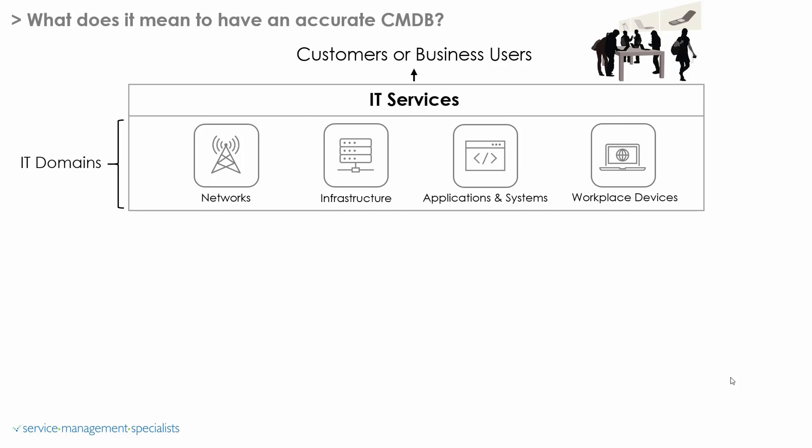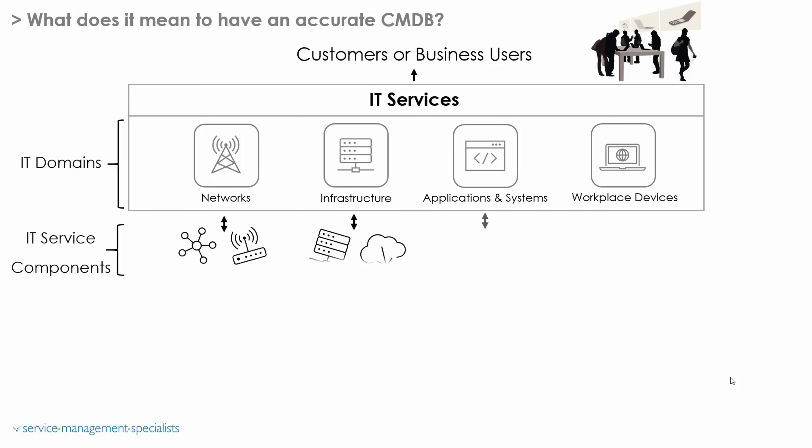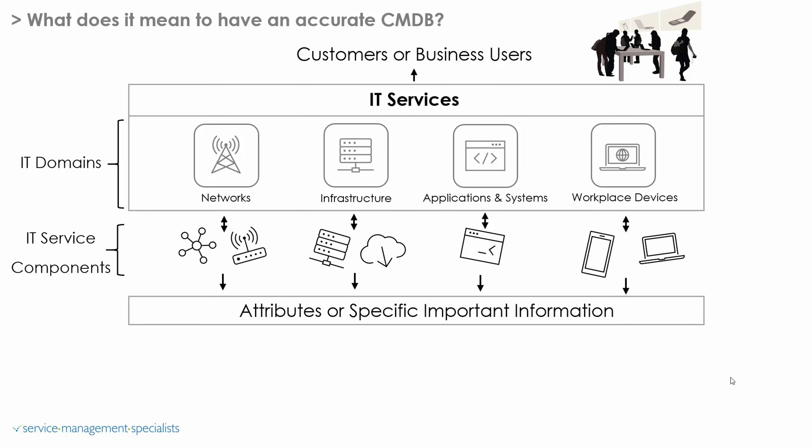If we think about those domains, what sits underneath them is a series of IT service components. There are a number of these that are used to roll up and be combined to deliver the services. What's really important is that we capture important information around each of these IT service components — this is typically called attributes within our CMDB. Each of these attributes needs to be specific and fit for purpose for our organisation, and when we capture all that information we capture it in our CMDB.